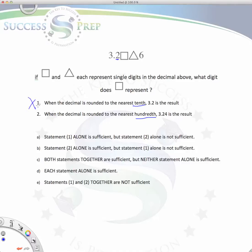Statement 2 says when the decimal is rounded to the nearest hundredth, the value is 3.24. Well, in that situation as well, looking for the square is still a very difficult thing to do.